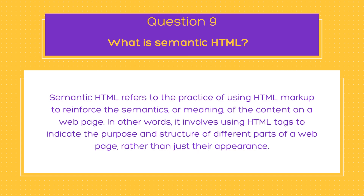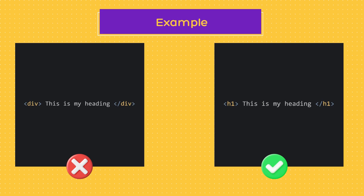As you can see here, I've provided an example showing the wrong way and the proper way of using semantic HTML. In the example, a div tag is used to create a heading, which is absolutely wrong. It might give you the desired output, but semantic HTML would encourage you to use h1 to h6 heading tags to create heading content.